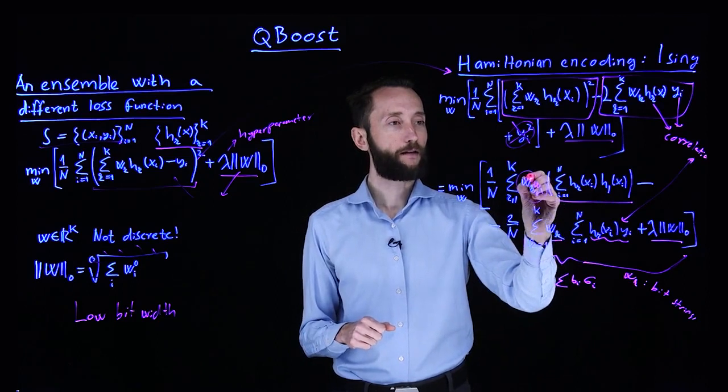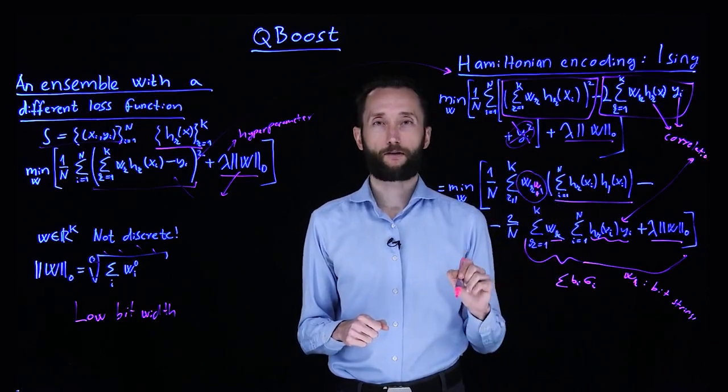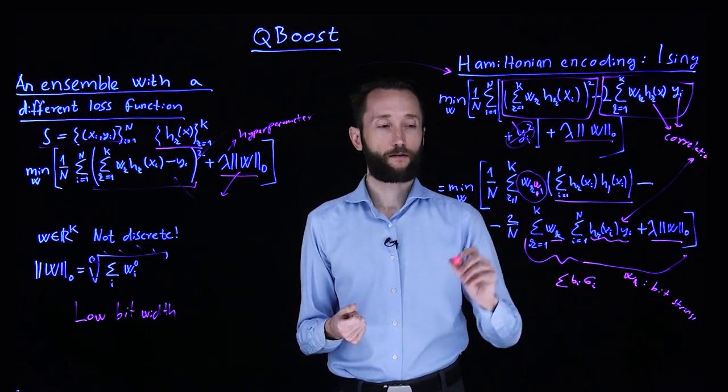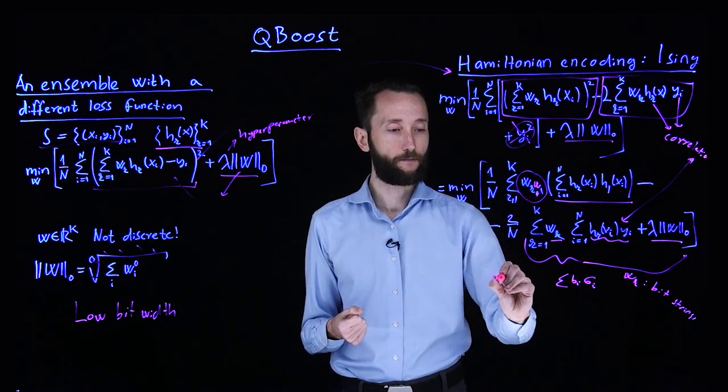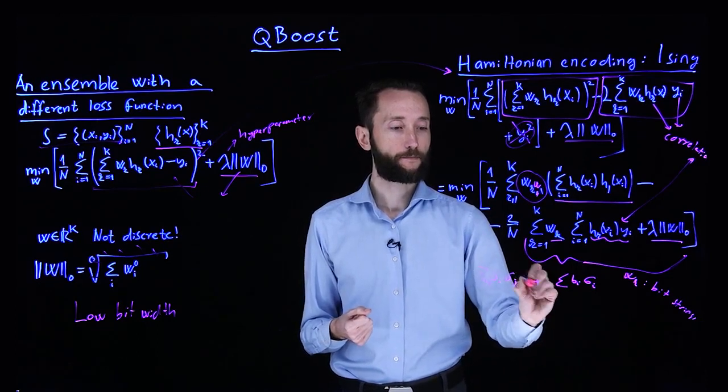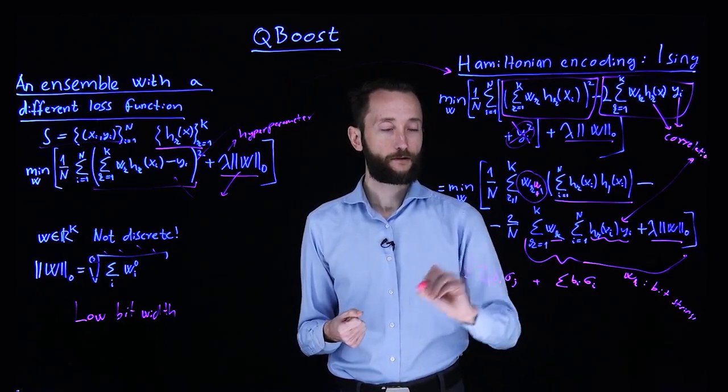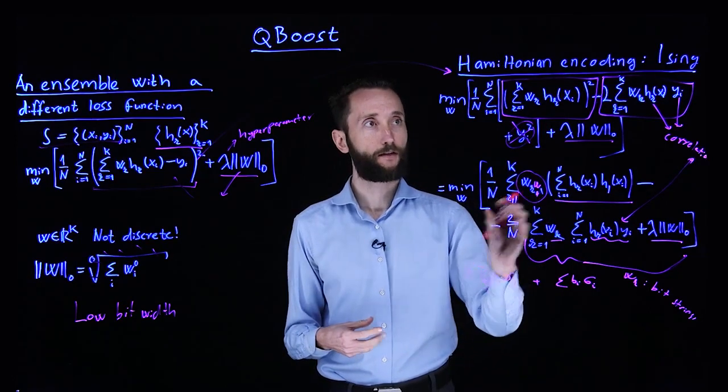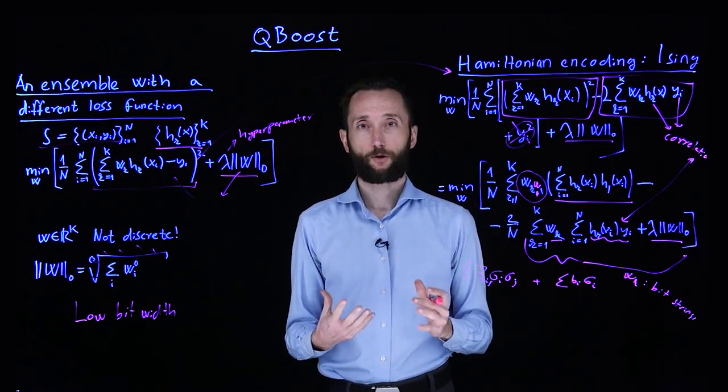And then this term here has this interaction, this quadratic interaction between these discrete variables. So this maps to the sigma i, sigma j interaction with certain couplings. So here you have your Ising model. That's all you have to do. And now you can solve this ensemble problem on a quantum computer.